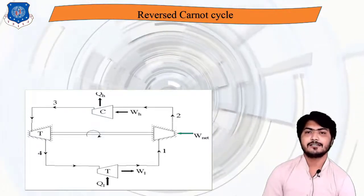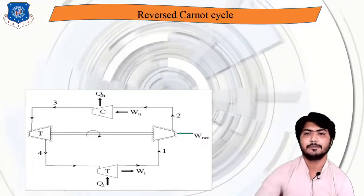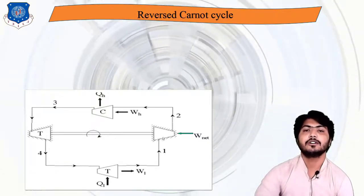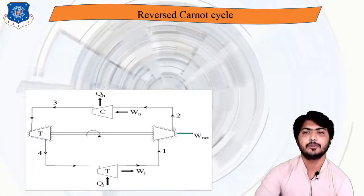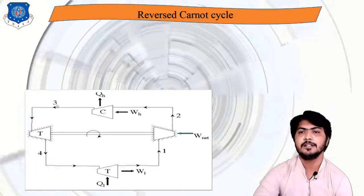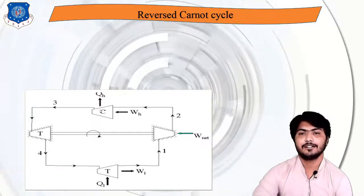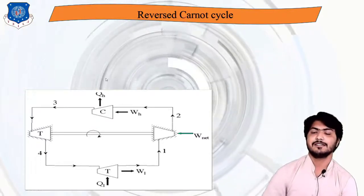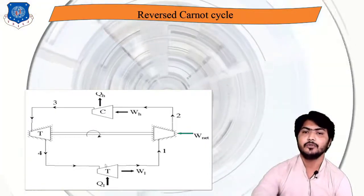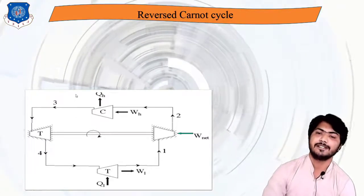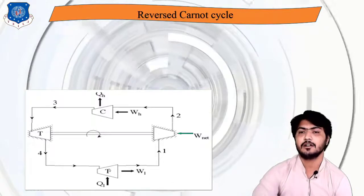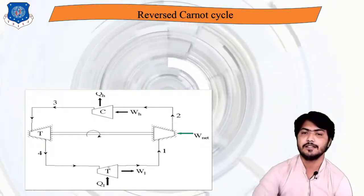The reverse Carnot cycle consists of four processes. Process 1 to 2 is isentropic (reversible adiabatic) compression. Process 2 to 3 is isothermal compression where heat is removed and supplied to the atmosphere. Process 3 to 4 is isentropic (adiabatic) expansion. Process 4 to 1 is isothermal heat absorption from the desired place, called the evaporator.